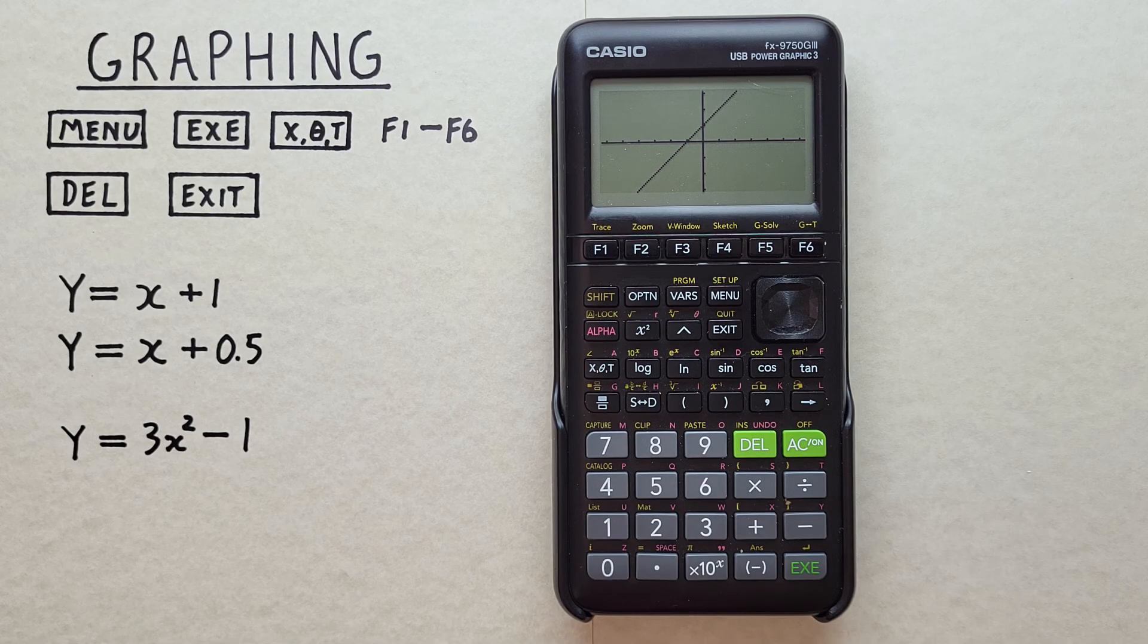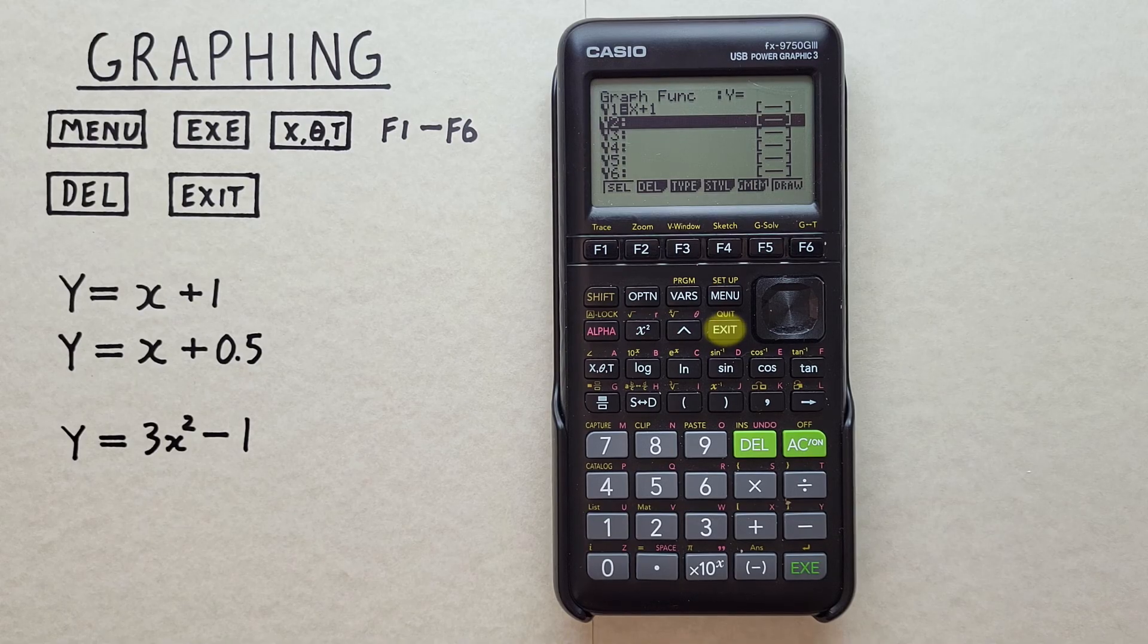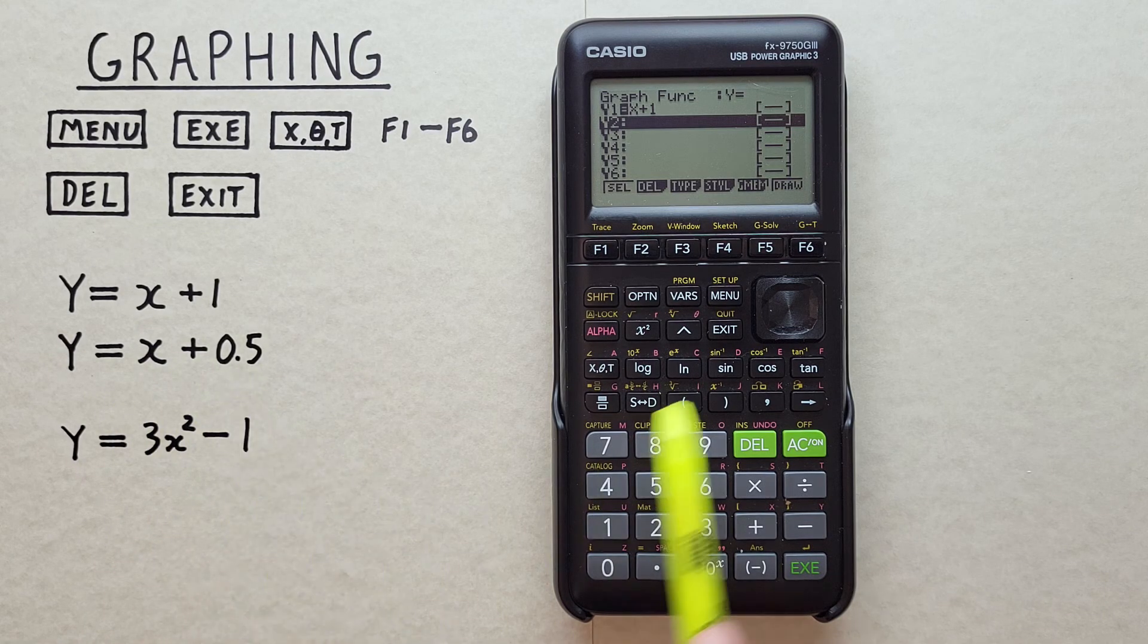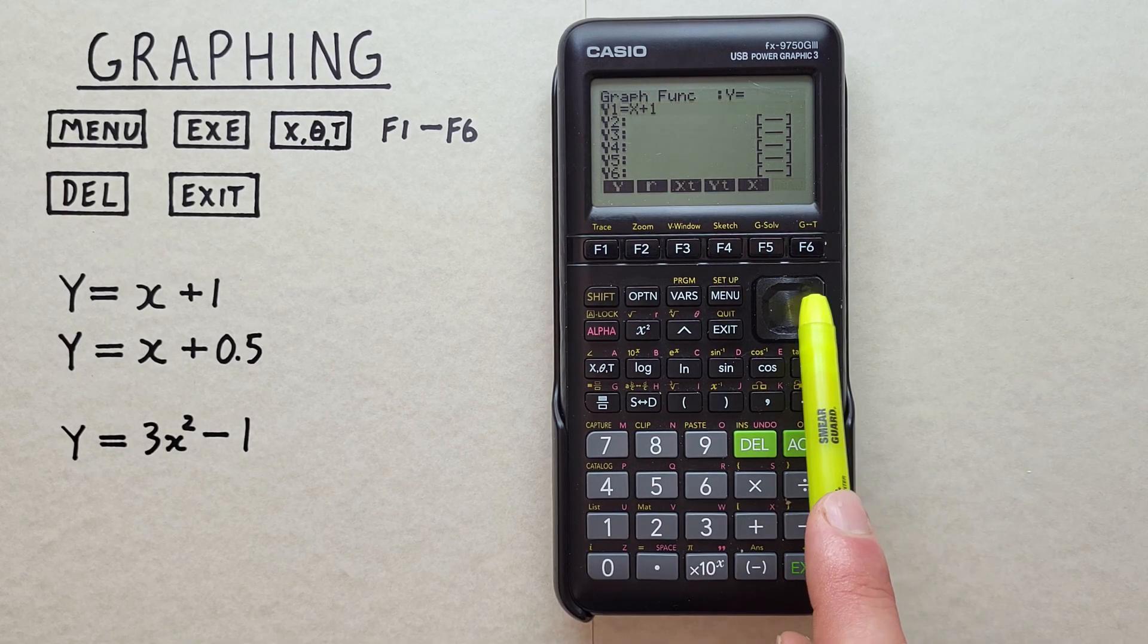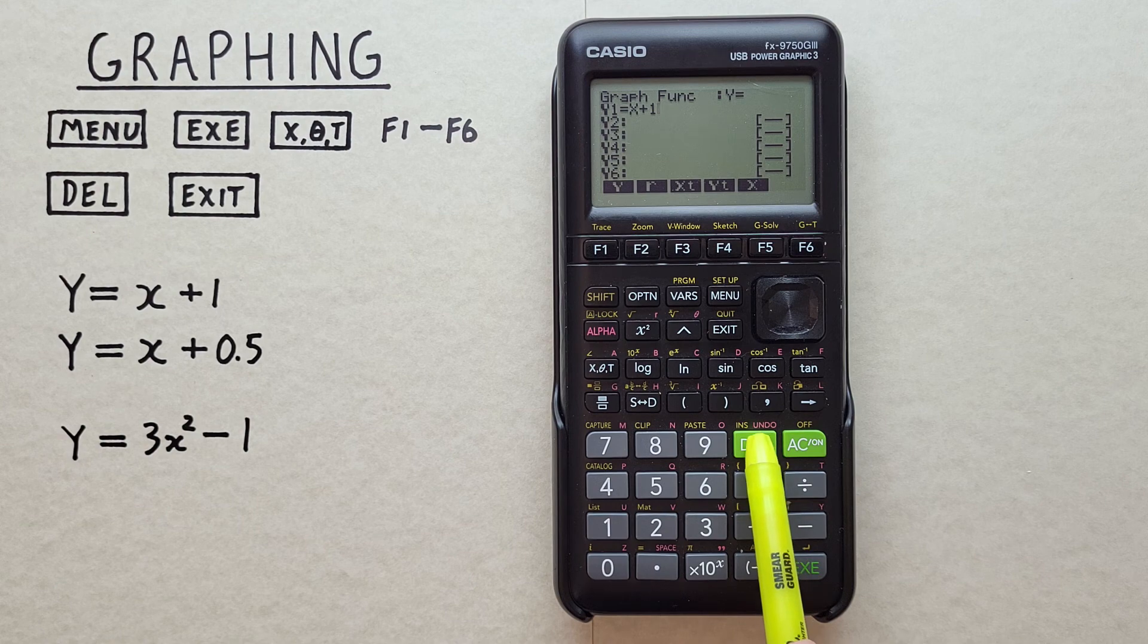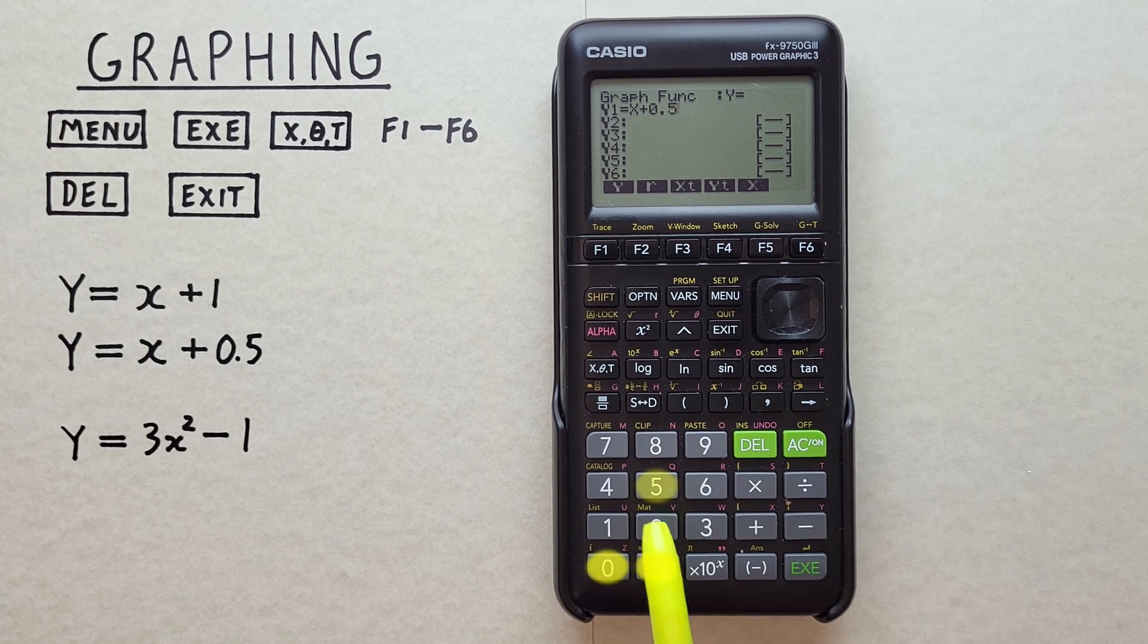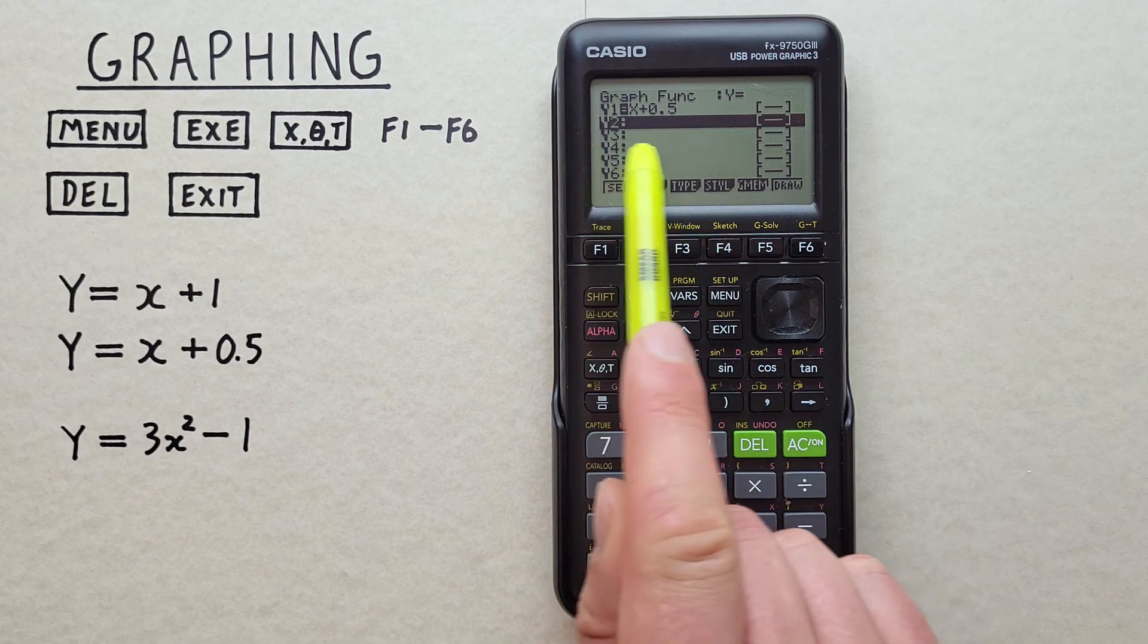To go back and enter another function, we can hit the exit key. Let's say we wanted to modify our initial function. Let's say we actually wanted to enter X plus 0.5. To change it, we just scroll up and then use the arrow key to scroll right across the function. We'll use that delete to delete the one and then enter the 0.5 and hit EXE. There we go. We've now modified that function.